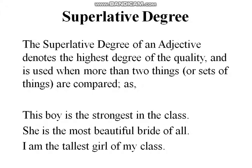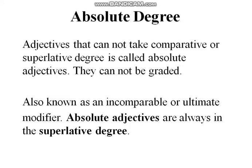Example: 'This boy is the strongest in the class' — one boy is compared with the whole class. 'She is the most beautiful bride of all' — one bride is compared with many brides. 'I am the tallest girl of my class' — again compared with the whole class. Notice that we use the article 'the' with superlative degrees: the strongest, the most beautiful, the tallest.